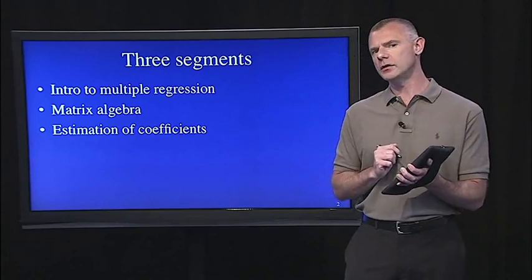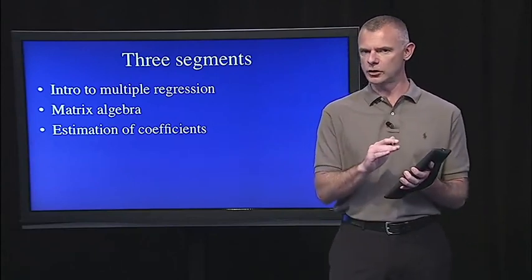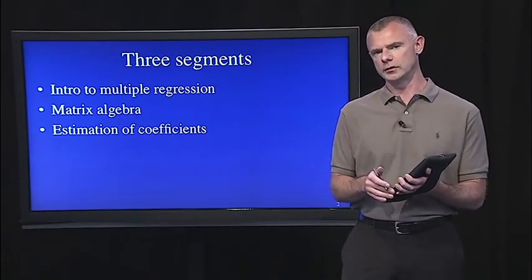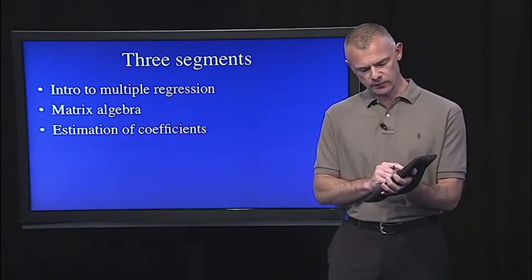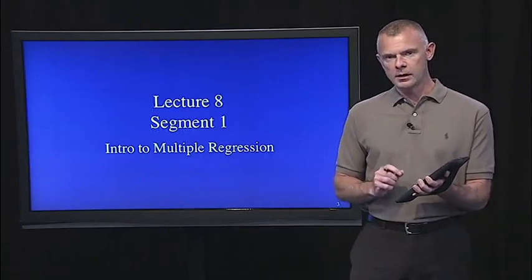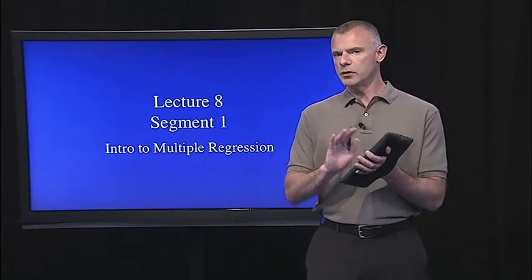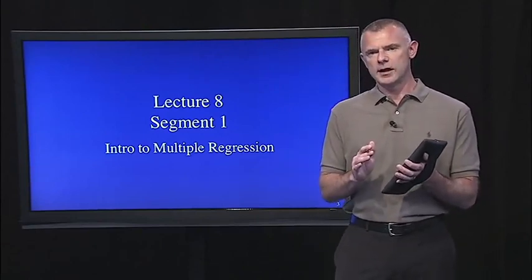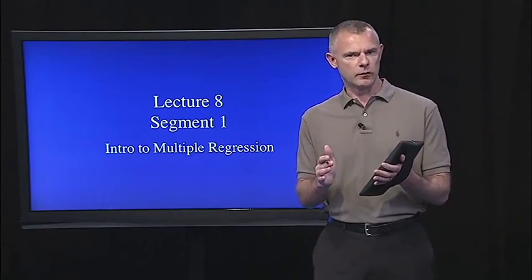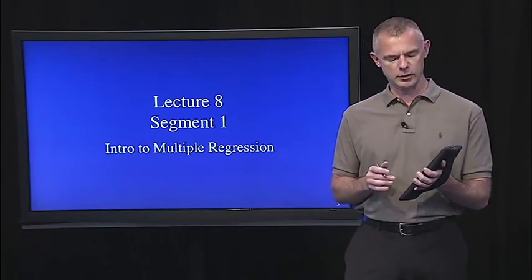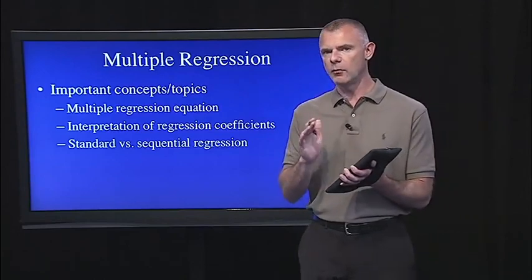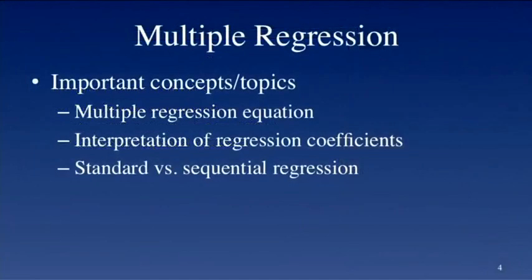In the third segment, we'll take a closer look again at the regression equation and talk about how those regression coefficients are estimated. In segment one, I'm going to present one relatively easy example so you can understand how to interpret the regression coefficients when there are multiple predictors in the equation. The important concepts to take away from this segment are understanding the equation and the components of the equation.